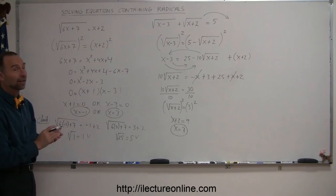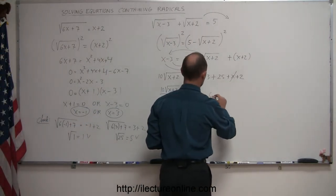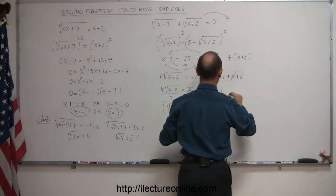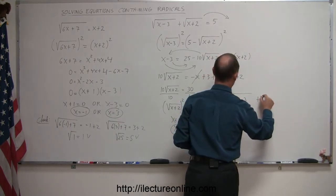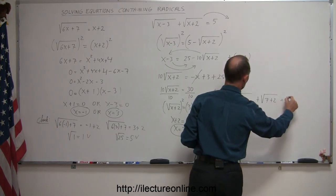Now to make sure that that's a valid solution, we have to plug that back in. So we're going to check. Plug the 7 back in my original equation, so I end up with the square root of 7 minus 3 plus the square root of 7 plus 2. That should equal 5.